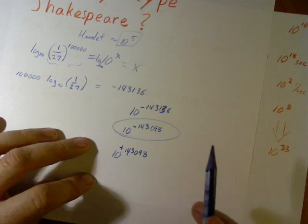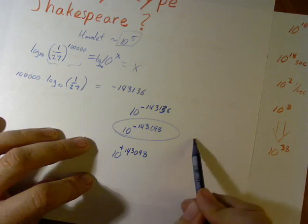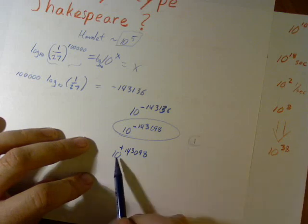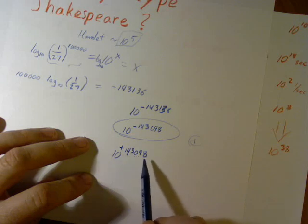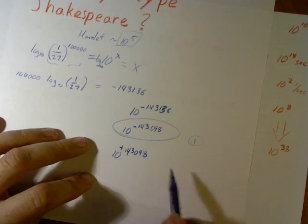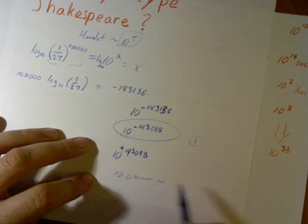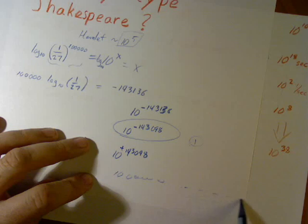the entire universe were to repeat itself this many times, this would happen once. Just once. This is 10 with 143,098 zeros after it. 10 with that many zeros. You know, you can't even write that many.